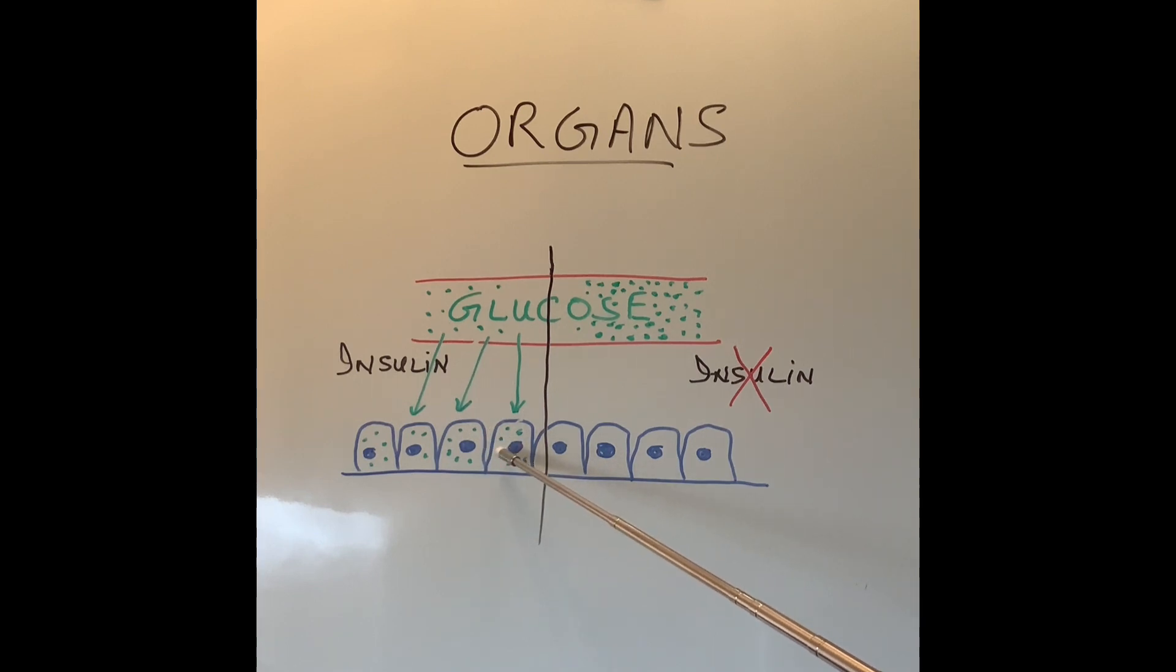Without the blood glucose coming into the cells, our cells cannot function normally. So those organs cannot function normally because glucose is the main energy source or fuel source like we have fuel in the car. Glucose is the main fuel in our body to make our body work. And the thing that pushes the glucose from our blood into our cells is insulin which is produced by our pancreas gland.